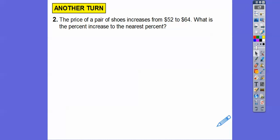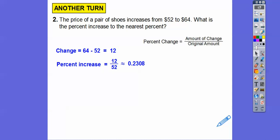All right, the price of a pair of shoes increases from $52, there's the original number, to $64. What's the percent increase? We find the change. We do the bigger number minus the smaller number. So 64 minus 52 is 12. Then we take 12 and divide it by the first number, 52. So 12 divided by 52 is about 0.2308. It does say to the nearest percent. So I'm going to say 23% increase in price.